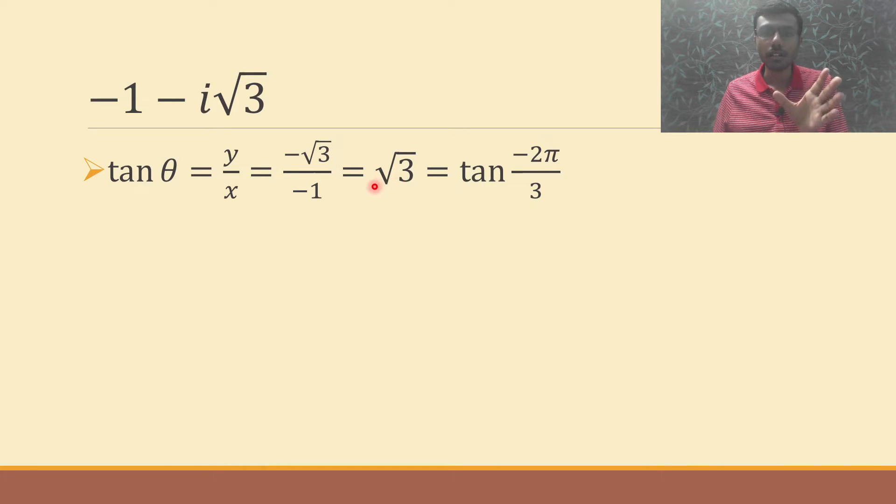Now listen, the given complex number can be written in the coordinate form as (-1, -√3). Basically, x coordinate is negative and y coordinate is also negative, so it lies in the third quadrant.